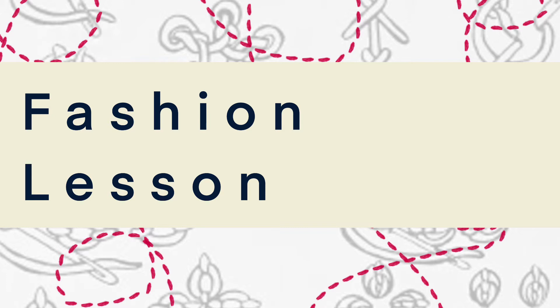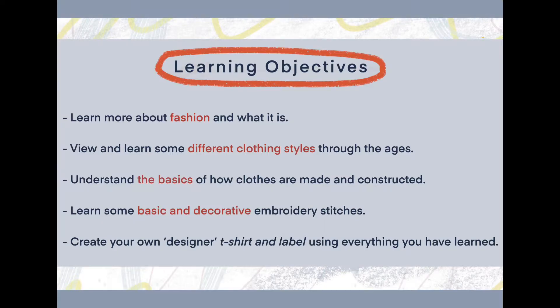I'm going to give you some learning objectives now so you can tick off what you need to do throughout the lesson. Today you're going to learn more about fashion and what it is, explore different clothing styles through the ages, understand the basics of how clothes are made and constructed, learn some basic and decorative embroidery stitches, and you're going to be creating your own designer t-shirt and label using everything you've learned. It's quite a nice lesson — you get to be creative and experimental.